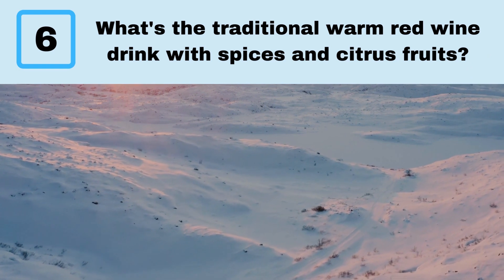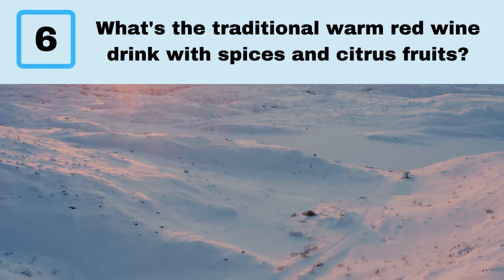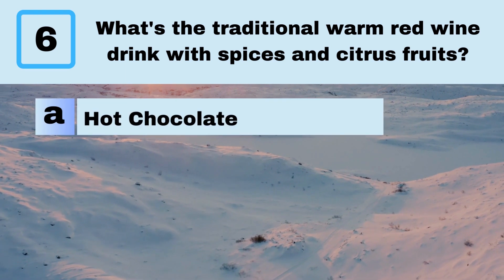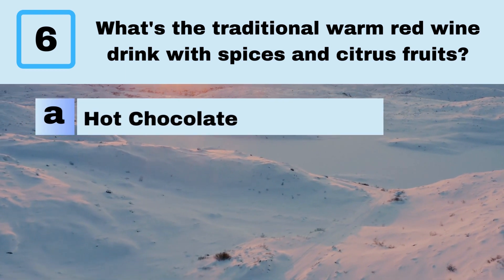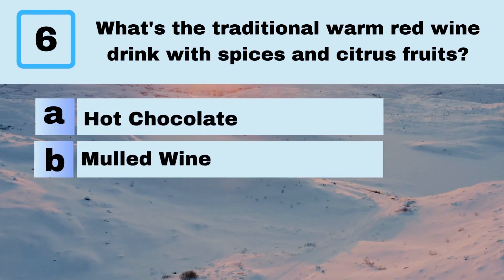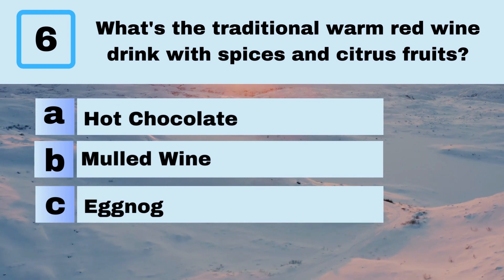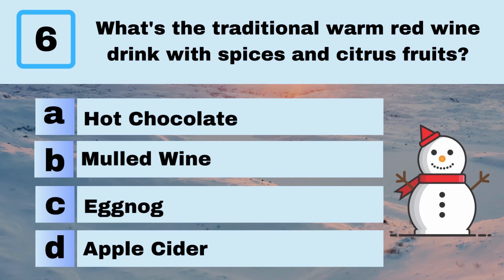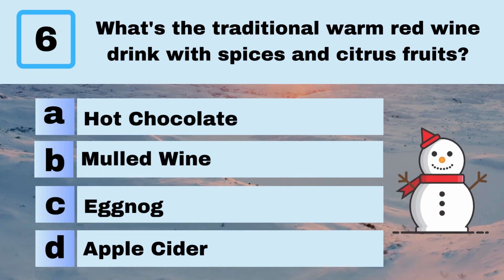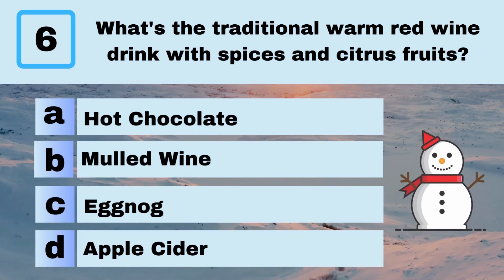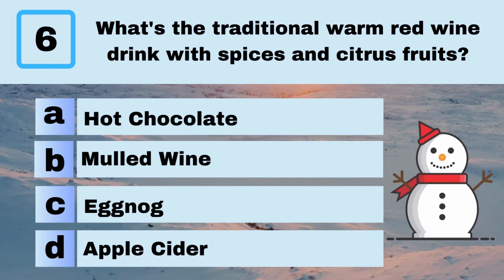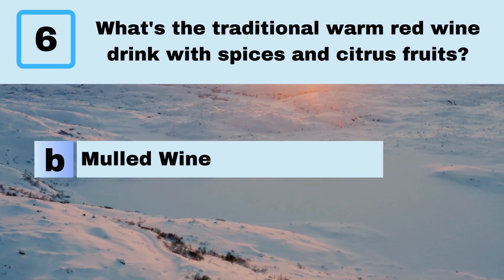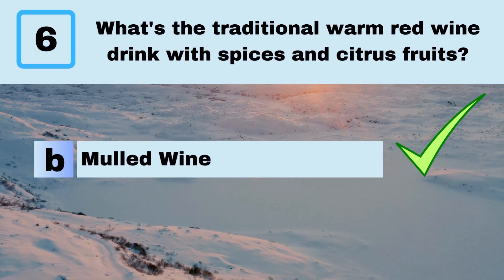Question 6. What's the traditional warm red wine drink with spices and citrus fruits? A. Hot chocolate. B. Mulled wine. C. Eggnog. D. Apple cider. Answer: B. Mulled wine.